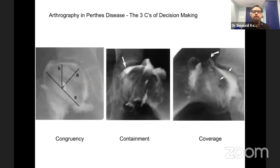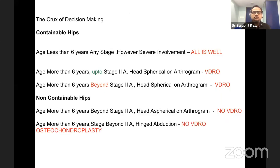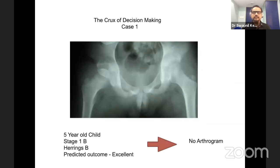Arthrography tells us three things — the three C's: congruency, containment, and coverage. The crux of decision making is dividing hips into containable and non-containable. Age less than six years — any stage, any severity — most do well whether or not you operate. Age more than six years up to stage 2a with a spherical head: do a varus derotation osteotomy to contain. Beyond stage 2a or when there is hinge abduction or complete collapse, a VDRO cannot be done and other procedures are needed. This first case is a five-year-old child — Elizabethtown stage 1b, Herring B — treated in a Swash brace, eventually healing well with minimal disability.